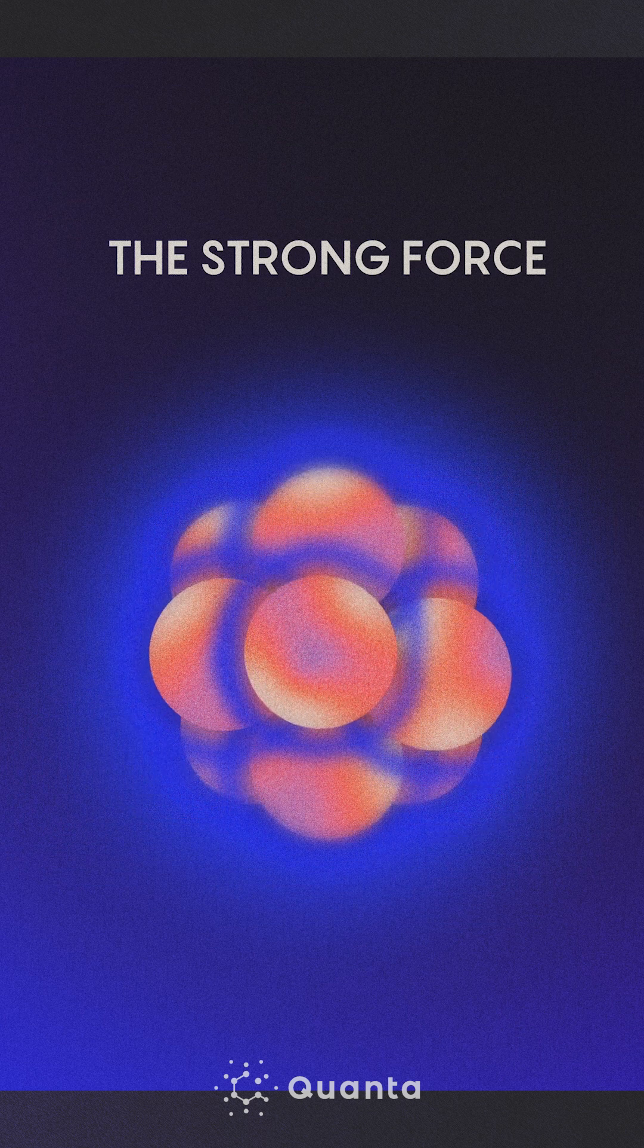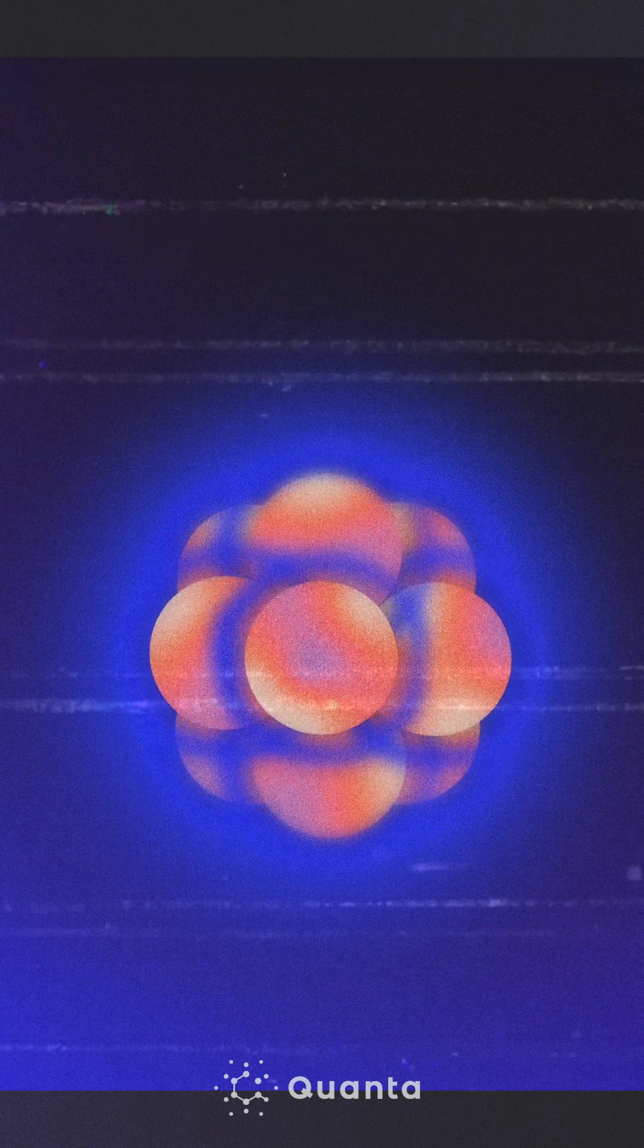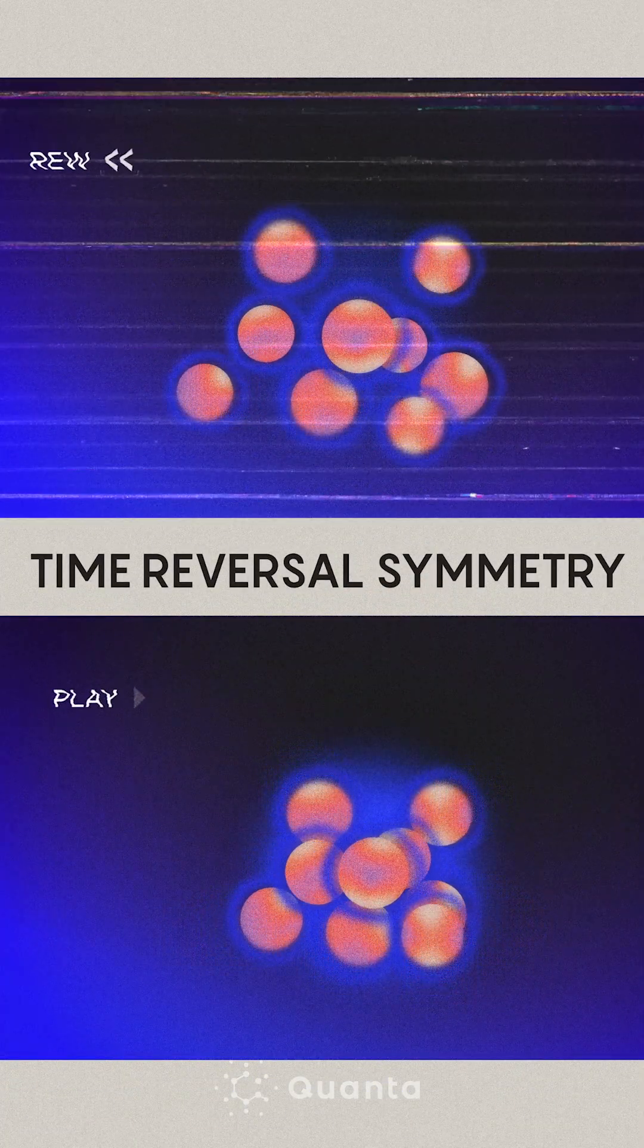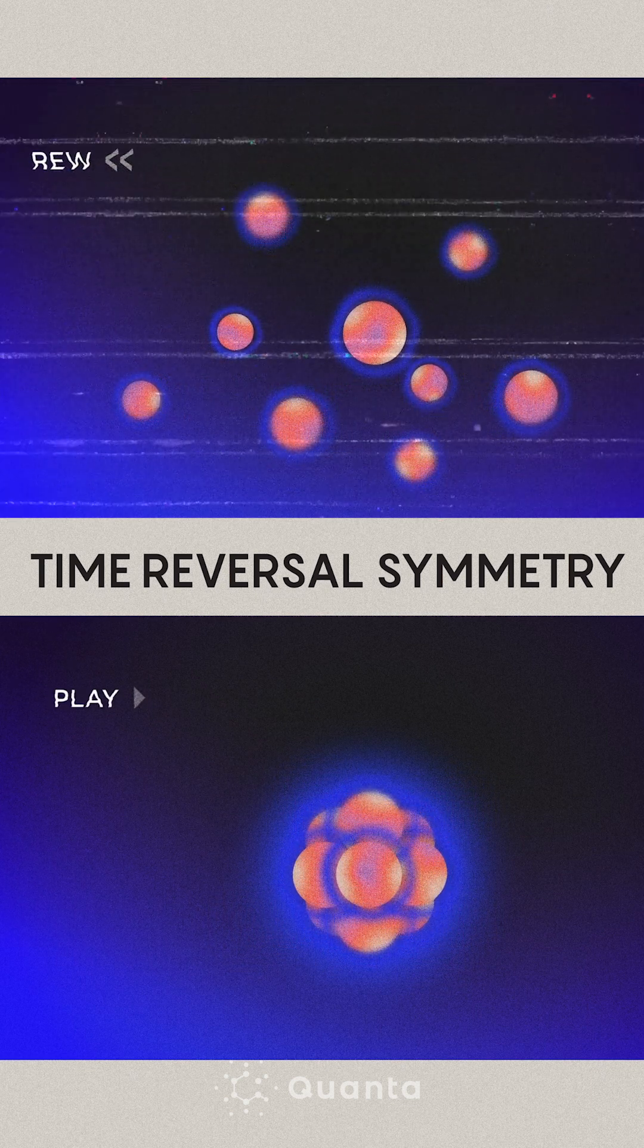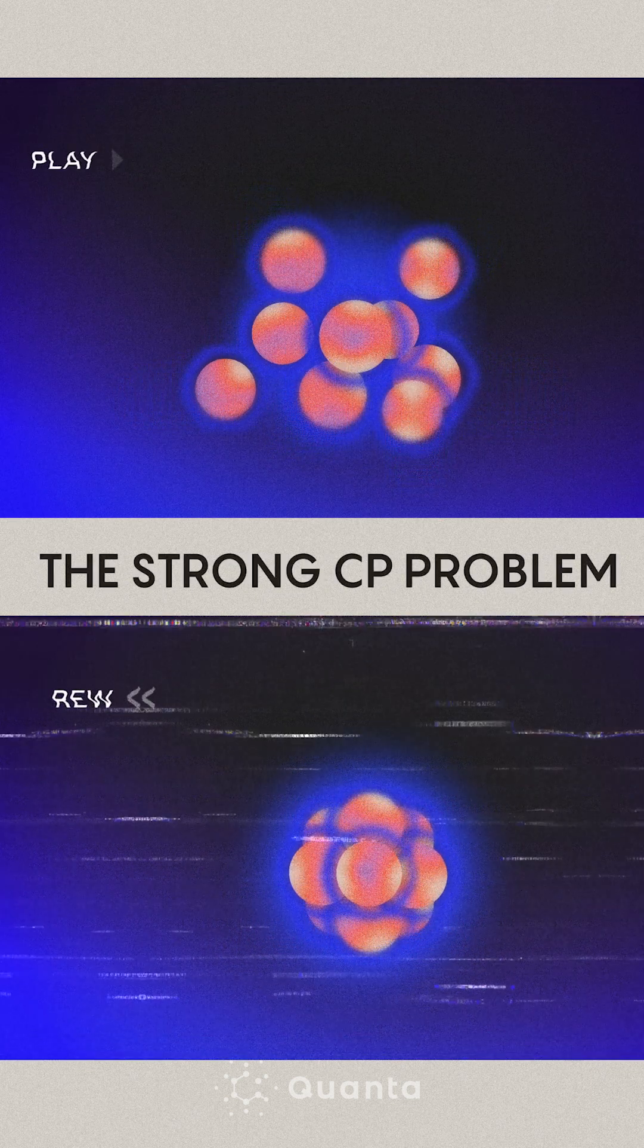Time reversal is a transformation where if you run the laws of nature backwards in time, they appear the same. And the strong force respects time reversal symmetry, even though one may not expect it to respect this symmetry. That's called the strong CP problem.